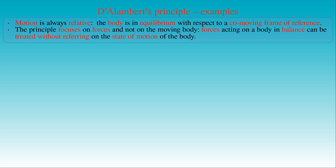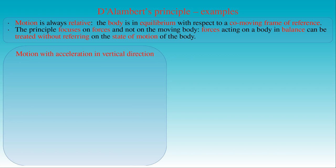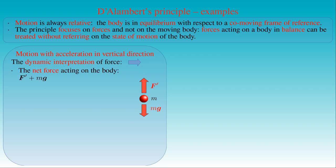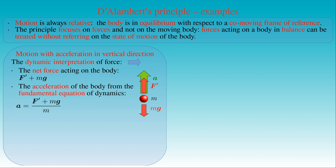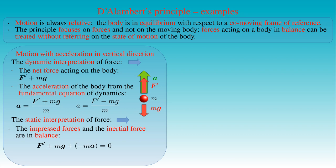Consider a body accelerated in the vertical direction, where a force f' greater than the weight mg is exerted on it. The dynamic interpretation states that the net force equals the vector sum of f' and the weight mg, so the acceleration a equals (f' + mg) / m, with magnitude |f'| minus m|g|, divided by m, pointing upward. The static interpretation states that force f', weight mg, and inertial force minus m times a are balanced — their vector sum vanishes. Both interpretations lead to the same equations.